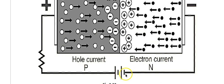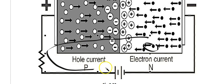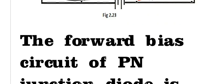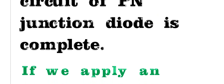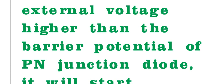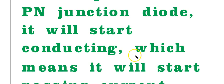In forward biasing, the holes accelerate towards the negative terminal of the battery, and the electrons accelerate towards the positive terminal of the battery. A current is constituted as a result. It is important to keep in mind that we have to apply a voltage greater than the barrier potential. For germanium the barrier voltage is around 0.3V and for silicon it is 0.7V — only then will current start flowing.